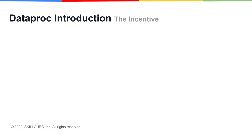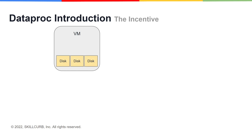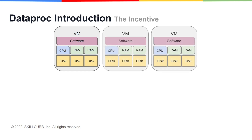Setting up Hadoop and Spark clusters is a lot of hassle. First you have to set the VM up and then you have to allocate the storage, the processing, and memory. Then you've got to install the software on the VM and then you've got to repeat this process a couple of times to make the cluster.